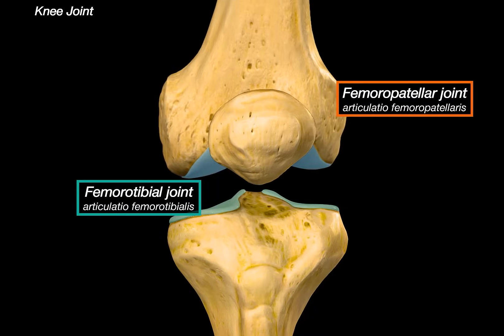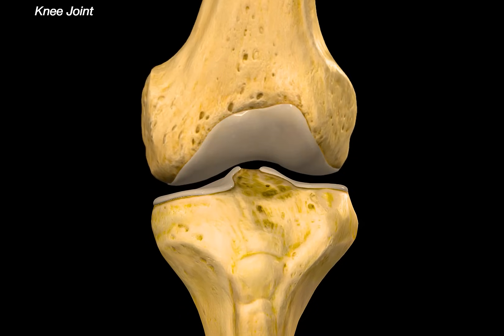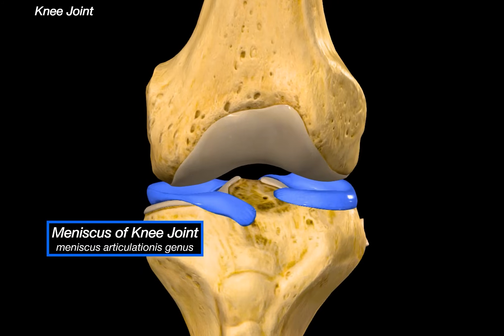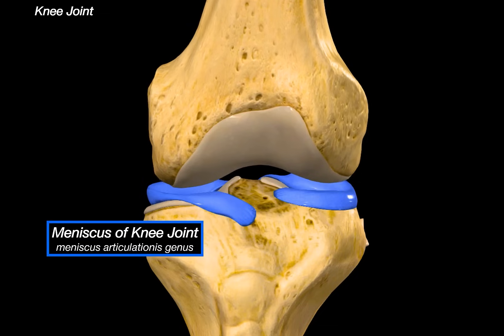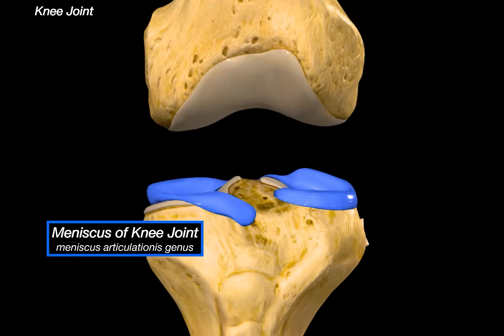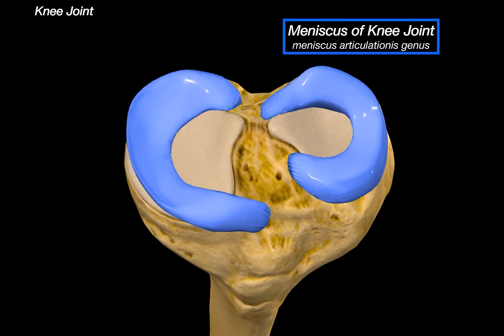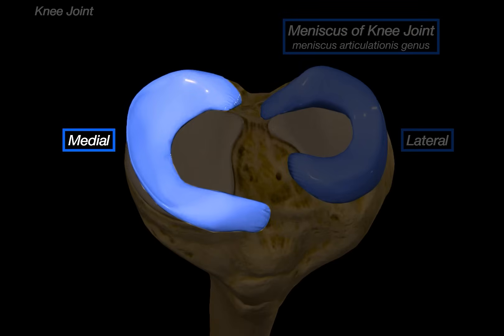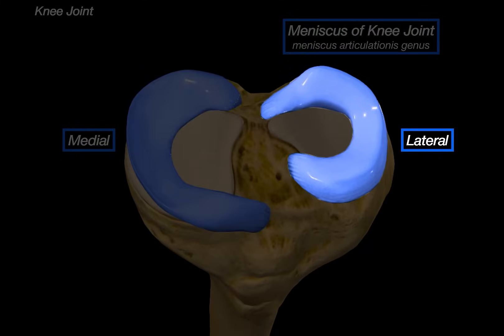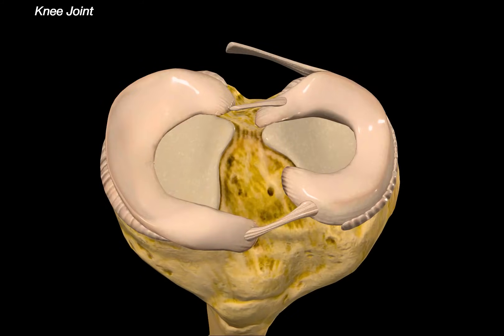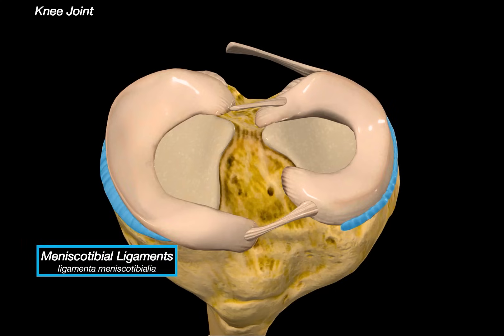The knee joint takes a lot of weight, twisting, and stress. To support all this, our body has extra layers of protection between these articulating surfaces. The first structures I want to highlight, sitting in between these joints, are the menisci. They sit on top of the tibia and help deepen the articulating surface while also acting as shock absorbers. Removing the femur, we can clearly see the shape and size of the medial and lateral menisci. The medial one is more C-shaped and firmly attached to the tibial plateau, while the lateral one is more circular and a bit more mobile. The meniscotibial ligaments, also called coronary ligaments, help anchor the menisci to the tibial plateau.